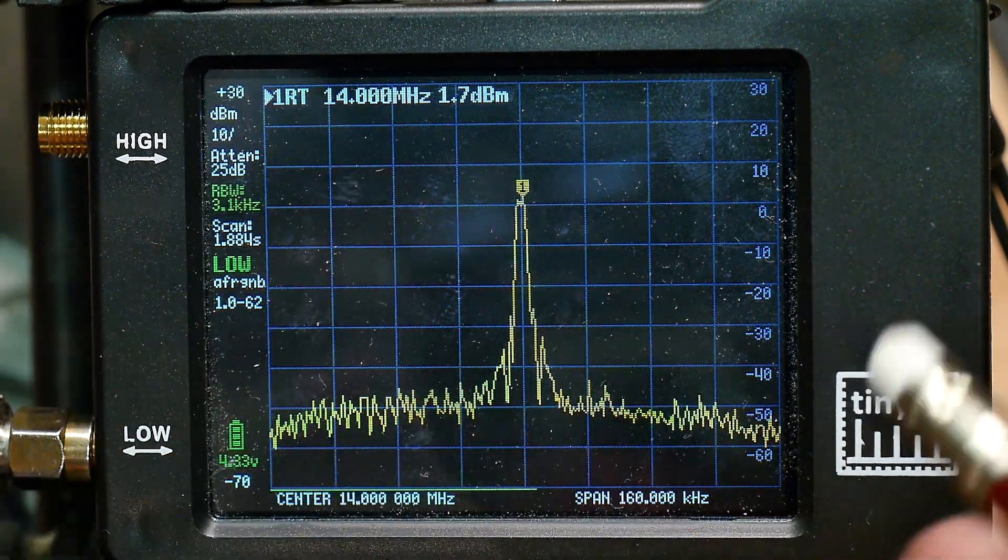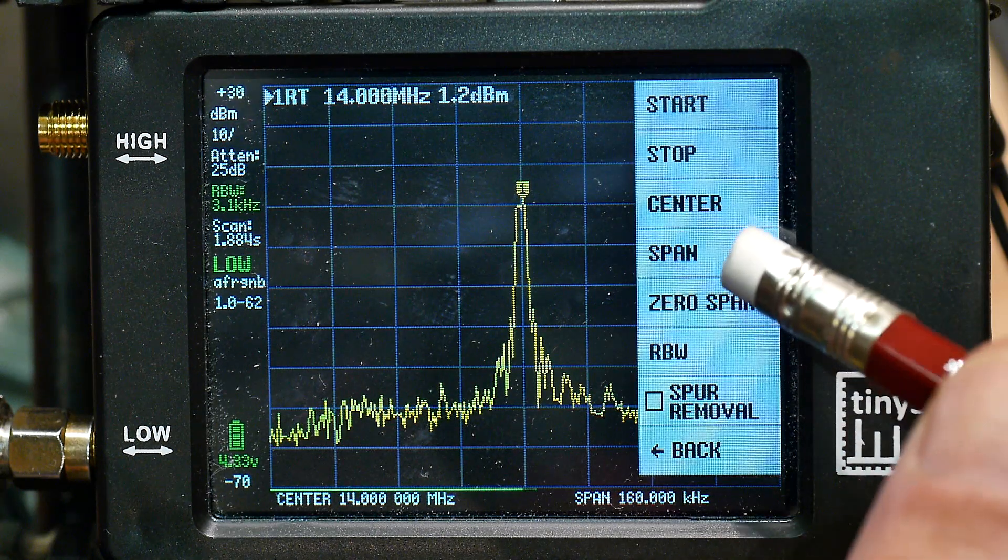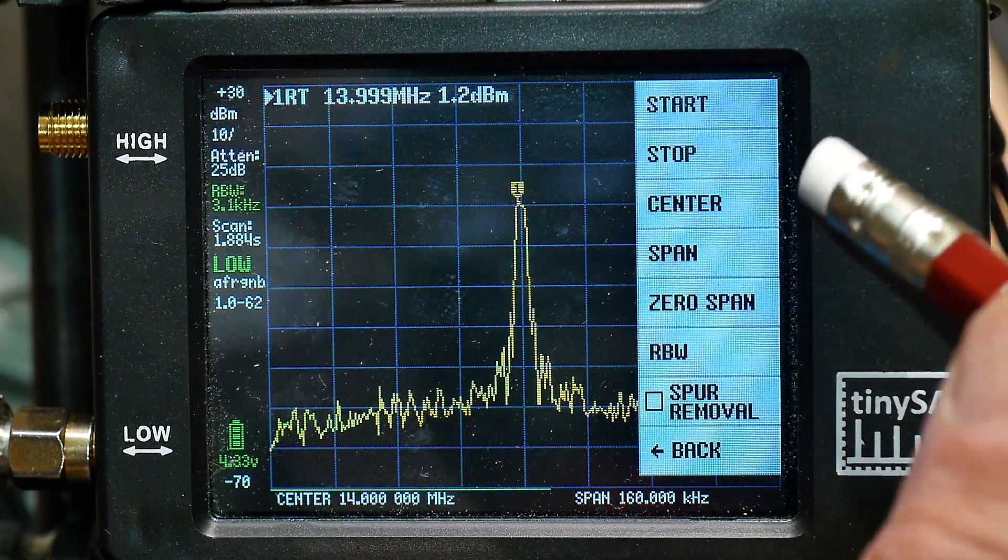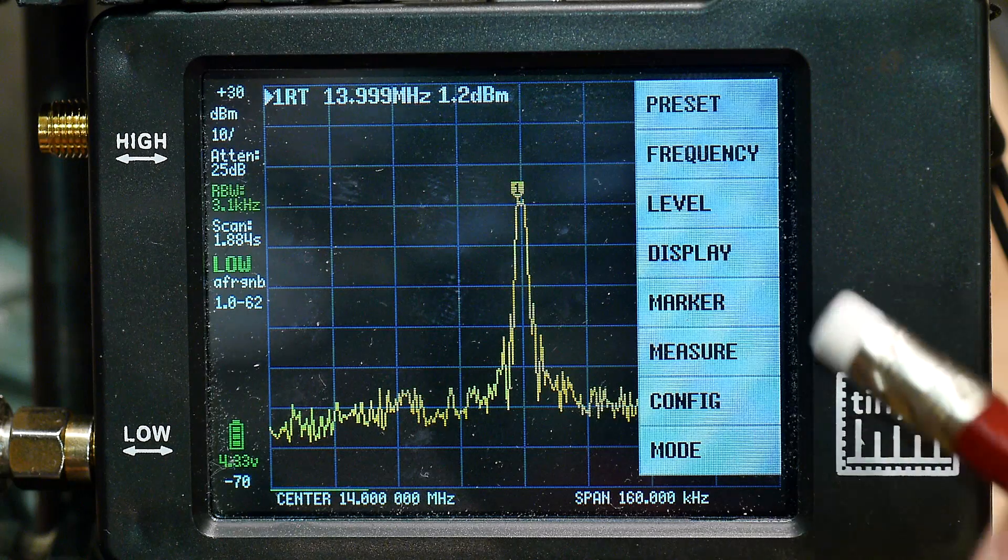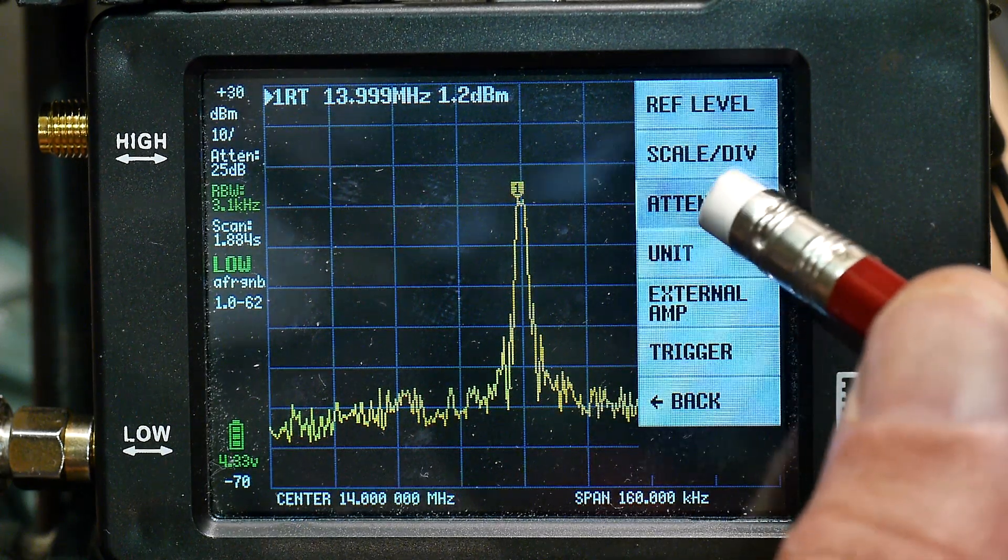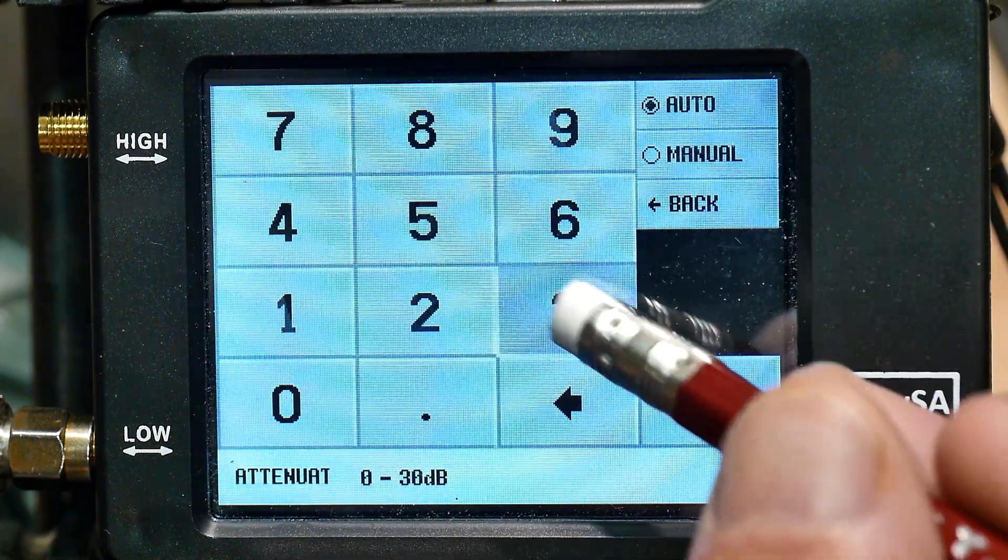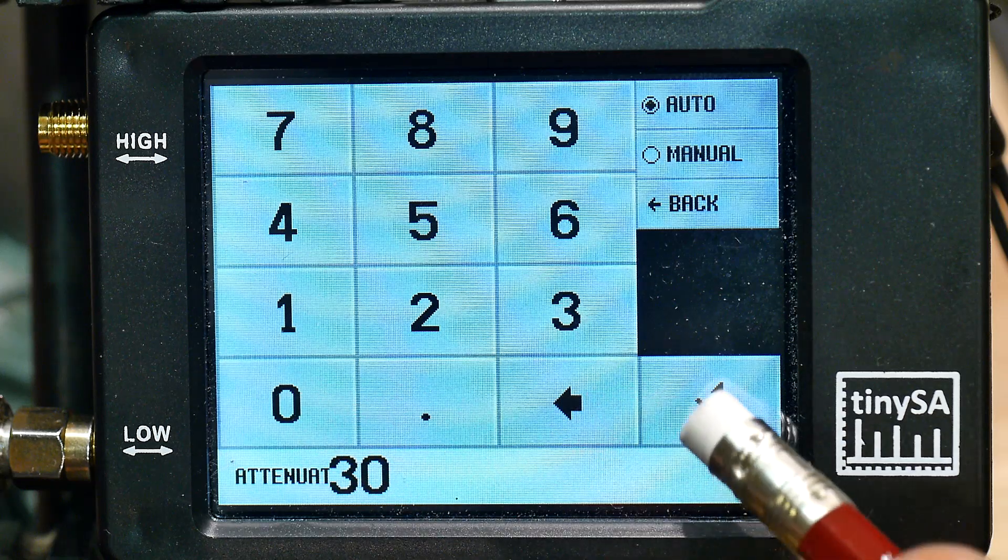And then the other thing that we want to do in order to get rid of some of this phase noise is we're going to put in more attenuation. So we are going to go to level, attenuate, manual, and we will put in 30 dB of attenuation.